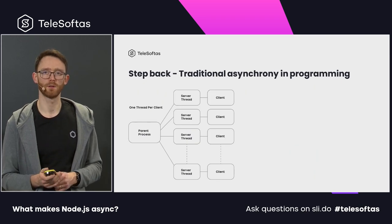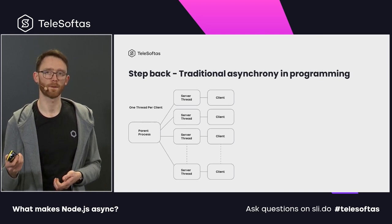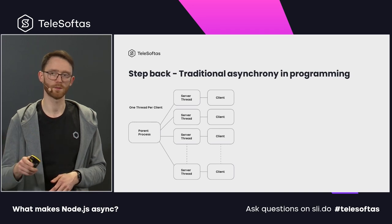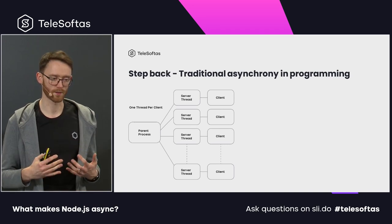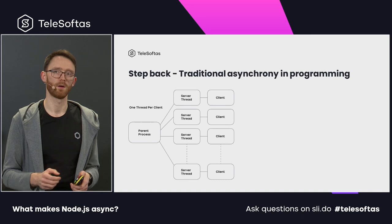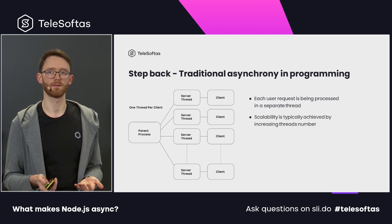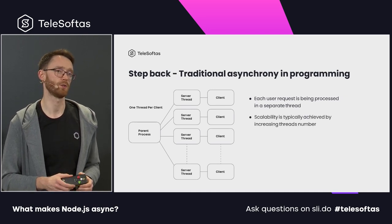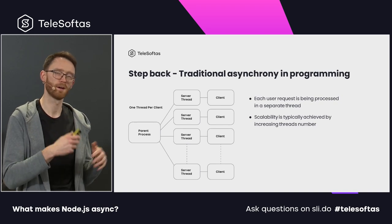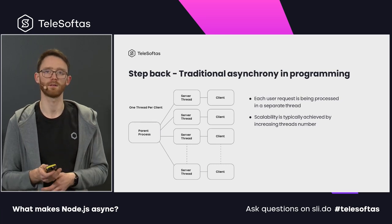Another example is a traditional server — for example, Tomcat on the Java side — where we create a thread for every user request. There is a thread pool; it takes a thread, assigns it to the request, and executes the code. Essentially, a thread per user. Scalability in this kind of server is achieved by increasing the thread count, but more threads mean more racing issues — deadlocks and the problems we discussed before.